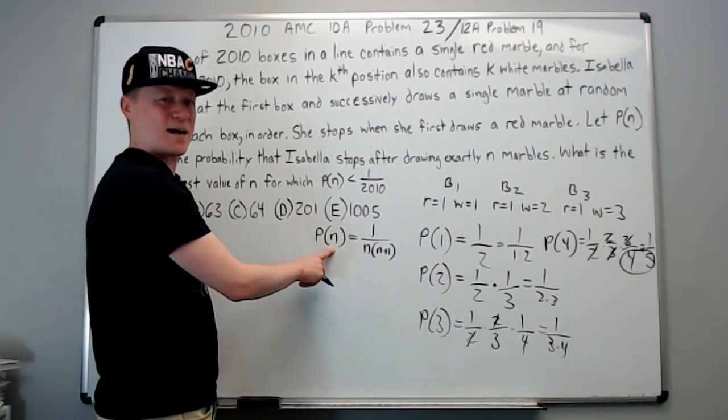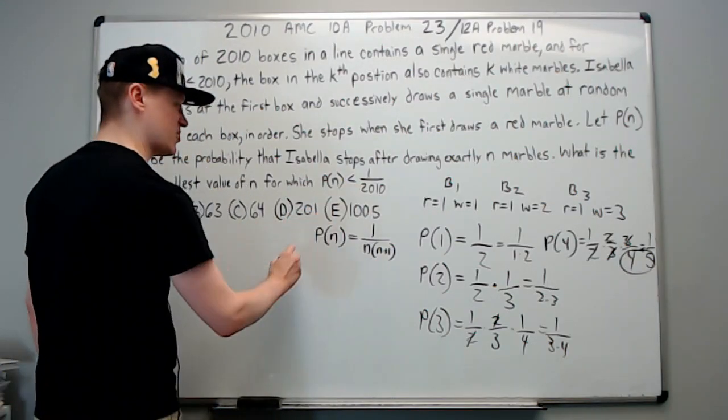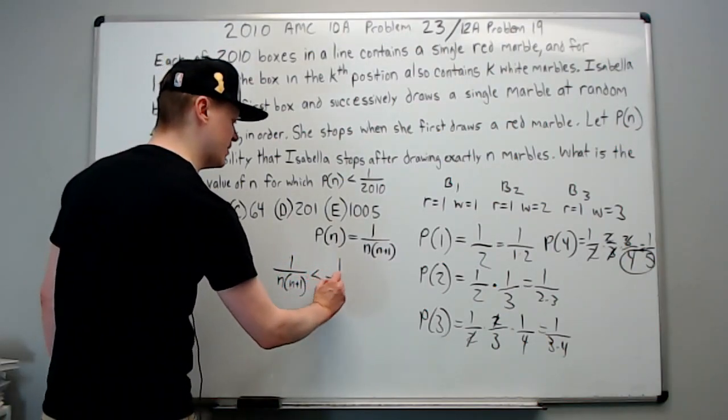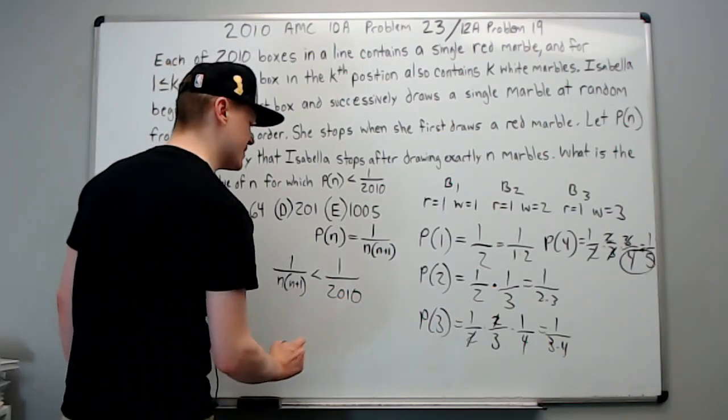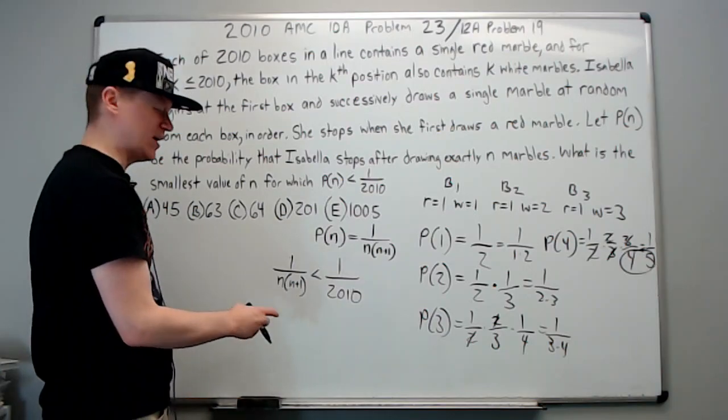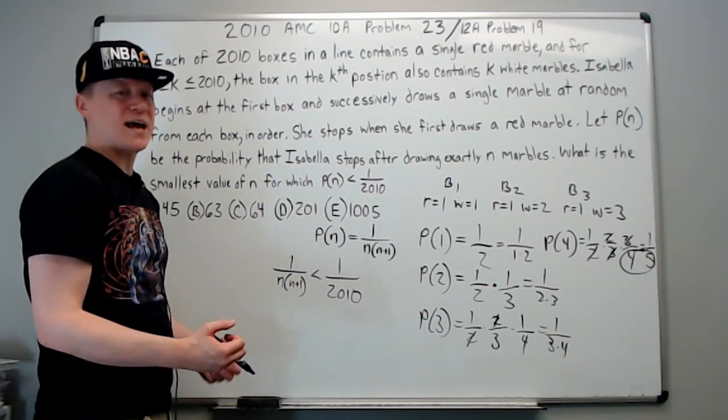So now that we can see that's what's happening, we just need to apply it to this formula. One over n times n plus one is less than one over 2010. Now you can just cross multiply if you want. There is an inequality but we're not multiplying by a negative, so we don't really have to worry about that aspect of it.